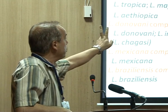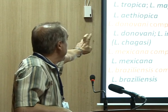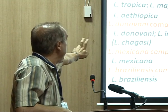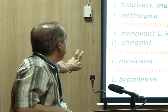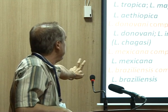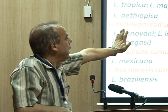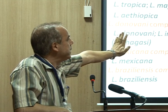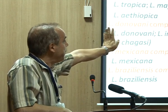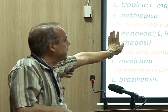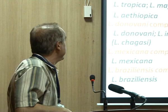It has two species: Leishmania species — Tropica complex, Donovani complex, Mexicana complex, and Braziliensis complex — and Trypanosoma species — Rhodesiense, Gambiense, and Cruzi.